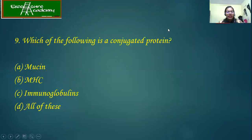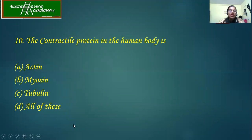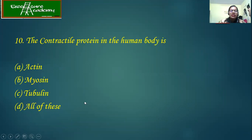Which of the following is a conjugated protein? Mucin, MHC (major histocompatibility complex), immunoglobulins, and all of these. All these proteins have some kind of prosthetic group present in them, so the answer is all of these. The contractile proteins in the human body: actin, myosin, and tubulin all work in order to help the muscle undergo contraction. So all of these are the answer again.